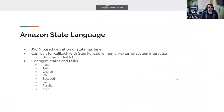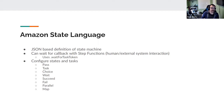AWS Step Functions uses what's called the Amazon State Language — a JSON-based definition for the state machine. You can define your Step Functions to not just automate things in AWS, but also wait for external entities to respond. How they respond is by waiting for a task token. There are different types of states and tasks that you can have, and I'll show you more of what these look like when we get to the demo.